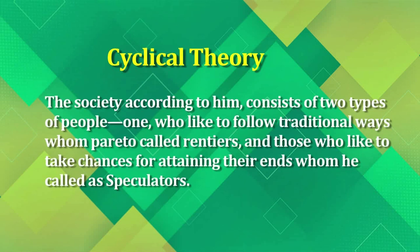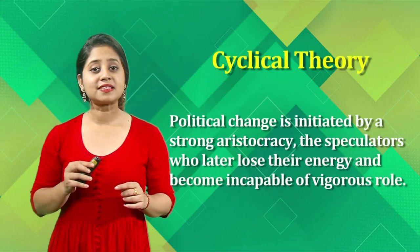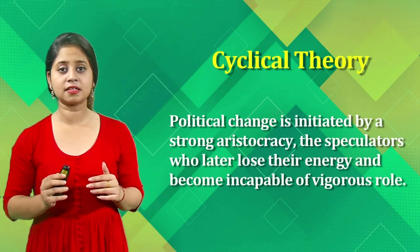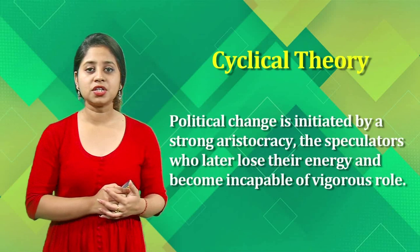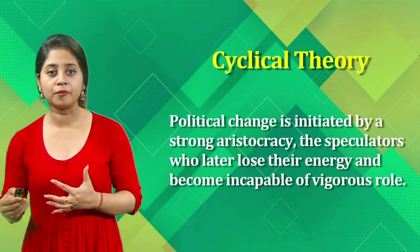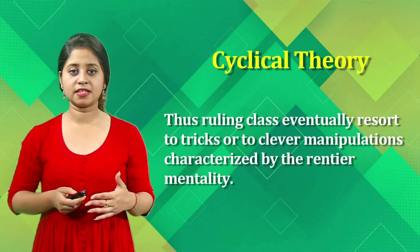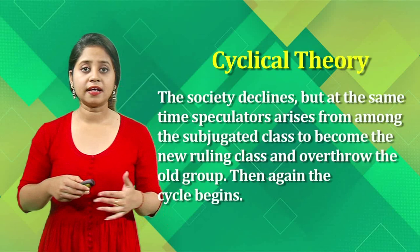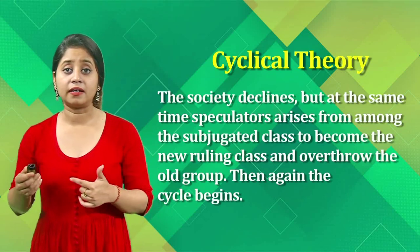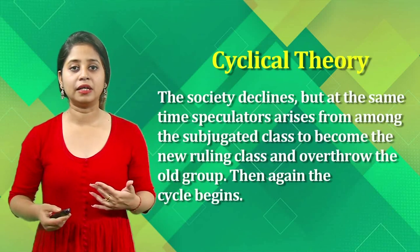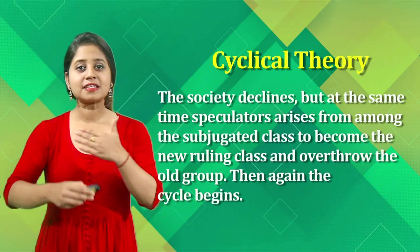According to Pareto, society consists of two types of people: those who like to follow traditional ways, whom he calls the rentiers, and those who like to take chances for attaining their ends, whom he calls the speculators. Political change is initiated by a strong aristocracy — the speculators — who later lose energy and become incapable of vigorous rule. The ruling class then resorts to clever manipulations characterized by the rentier mentality, and society declines. But at the same time, speculators arise from the subjugated class to become a new ruling class, overthrow the old group, and this cycle continues.